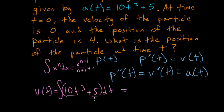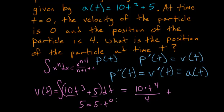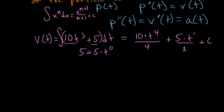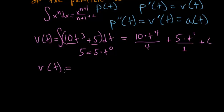The antiderivative of 10t³: we increase the exponent by 1, so it becomes 10t⁴, and then we divide by that new exponent, 4. Then we add the antiderivative of 5. We can think of 5 as 5t⁰, increase the exponent by 1, so it becomes 5t¹, divided by 1. Then we add a constant. Simplifying, the velocity at time t equals (10/4)t⁴, which simplifies to (5/2)t⁴, plus 5t, plus C.